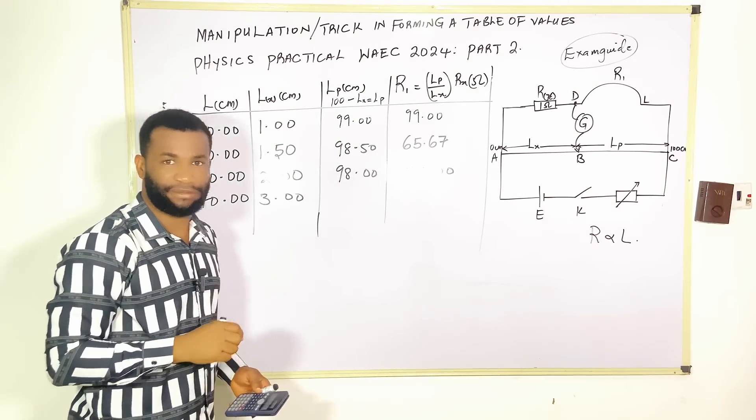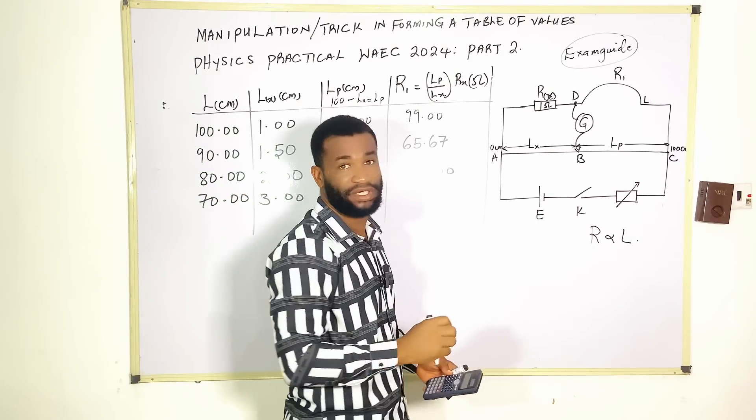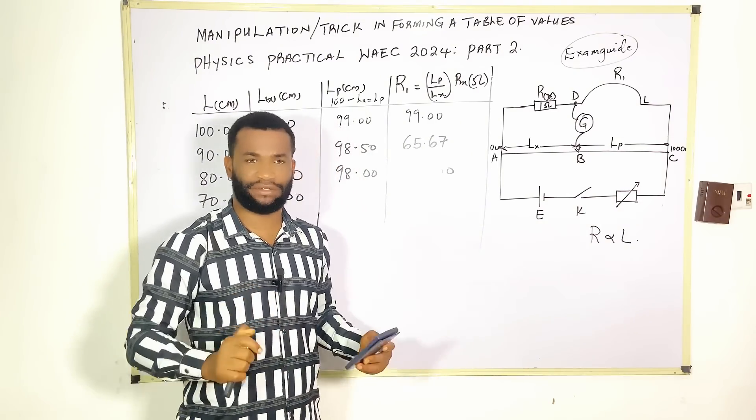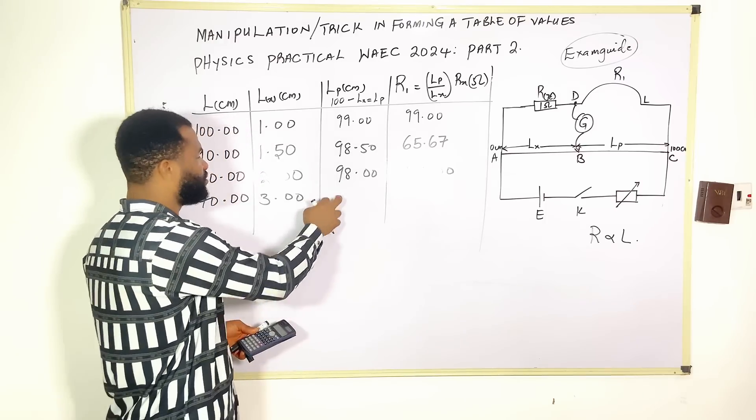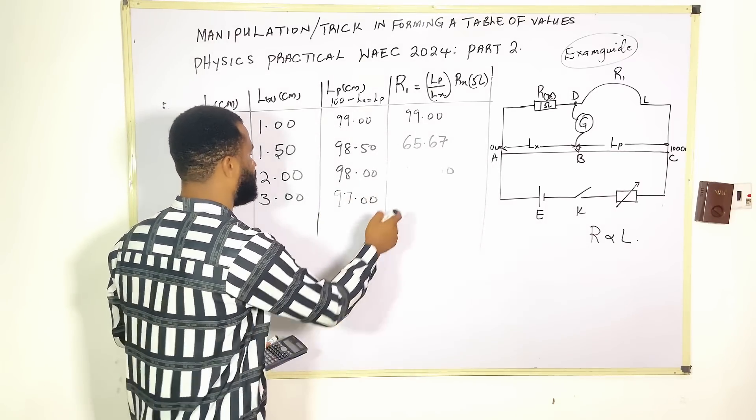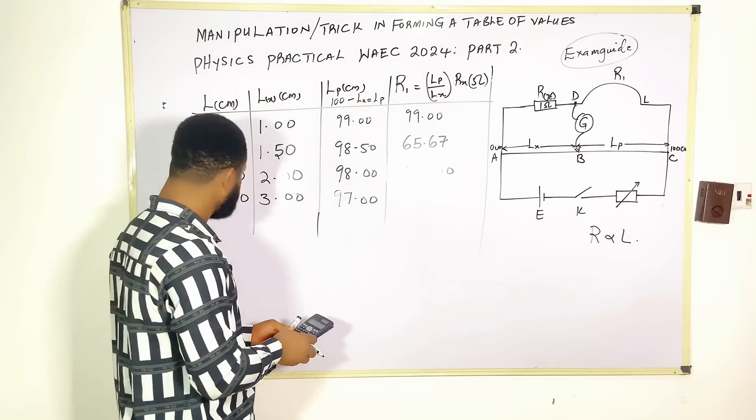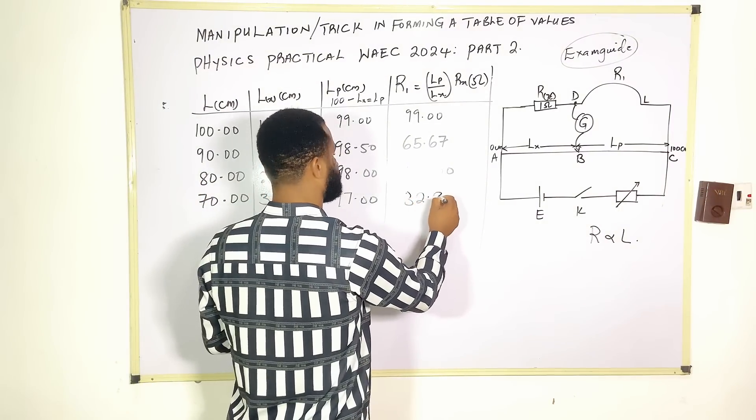Remember, all we are doing here is to predict. We have not seen the question. So the next one here is going to be 100 minus 3, which is 97.00. And this is going to be 97 divided by 3, giving 32.33.